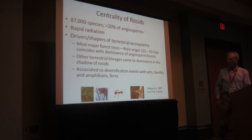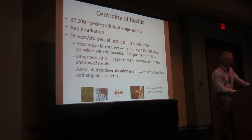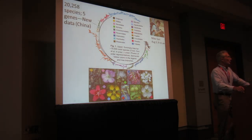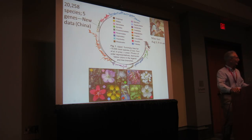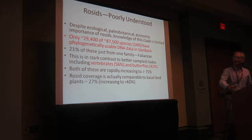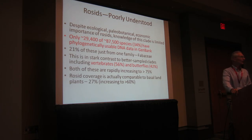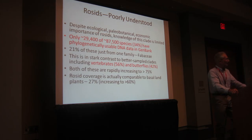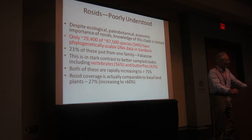We're talking about lineages like the ferns, some mammals, many insects, amphibians — they owe their success to the rise of the rosids. We built a large tree of about 20,000 species. Meow will tell you more about that — it looks like a really impressive tree, and it is great. But when you do the math, there are actually a few more species with usable data: we could have gone up to 29,000. But that's really only 34% of rosids with phylogenetically usable data in GenBank, and 21% of those are from one family — the Fabaceae.